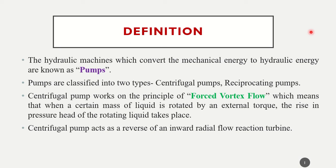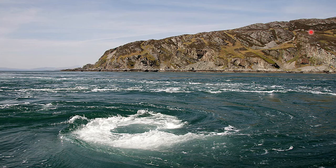In a reaction turbine both pressure energy and kinetic energy are considered. Inward radial flow means water enters axially and leaves radially. But a centrifugal pump is the reverse — water enters the centrifugal pump radially and exits axially. Looking at the diagram: a mass of liquid subjected to an external torque rotates, and during rotation mechanical energy is slowly converted into pressure energy, making the water rise.